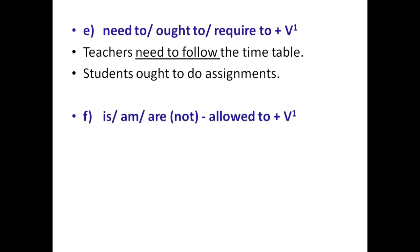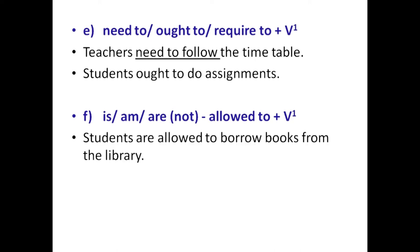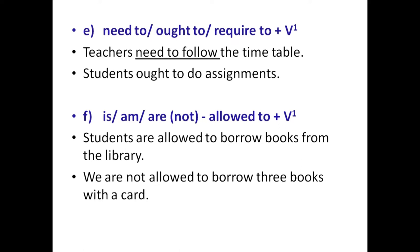Structure F is is/am/are allowed to plus verb (positive) or is/am/are not allowed to plus verb (negative). Example: students are allowed to borrow books from the library — the structure is are allowed to plus V1. Another example: we are not allowed to borrow three books with a card — meaning one can borrow two books at a time, not three. The structure is are not allowed to plus V1.